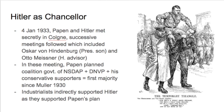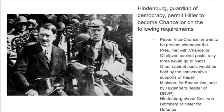Von Papen, in order to get back at Schleicher, came to Hitler and said: 'We need to get rid of him — he took my power from me. I'll support you in your aims to become Chancellor.' Finally, Hindenburg — often described as the guardian of democracy because he had refused to let Hitler become Chancellor — now permitted Hitler to become Chancellor and ultimately let him become the ultimate dictator. As vice-chancellor, Papen was to be present whenever the president met with the Chancellor. Of the 11 cabinet posts, only three would go to the Nazis; other posts would be held by conservative supporters of Papen. Hindenburg chose General von Blomberg for Minister of Defence. So even though Hitler became Chancellor, there was a list of requirements limiting his power somewhat.